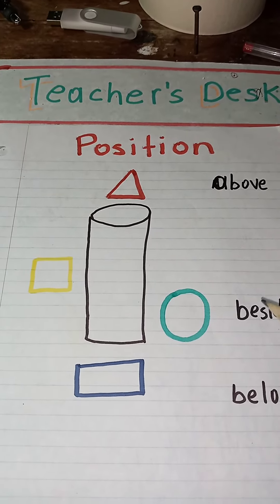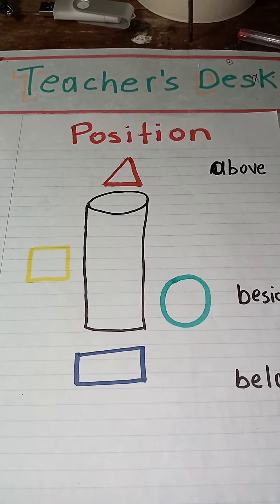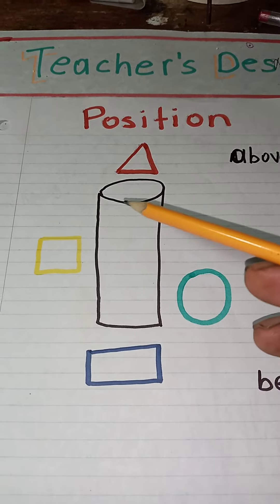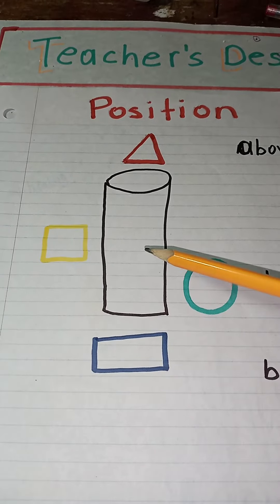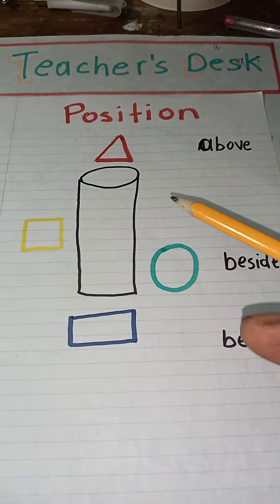It's very important for your child not just to know direction, but also to know position. For example, this is a cylindrical shape. I want to test if the child knows different positions.